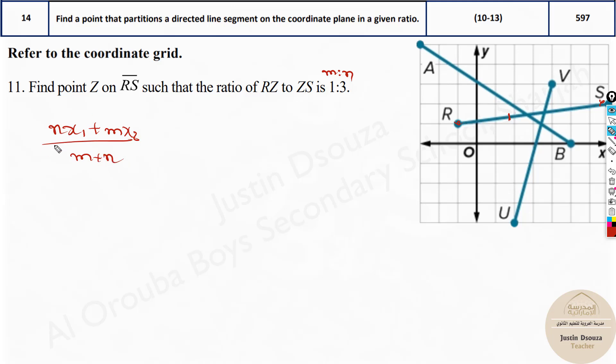X1 plus M into X2 divided by M plus N. This is for the X axis. Now what about the Y axis, the Y coordinate? That will be same thing but instead of X1 we have to write Y1 and over here it's Y2 divided by M plus N.